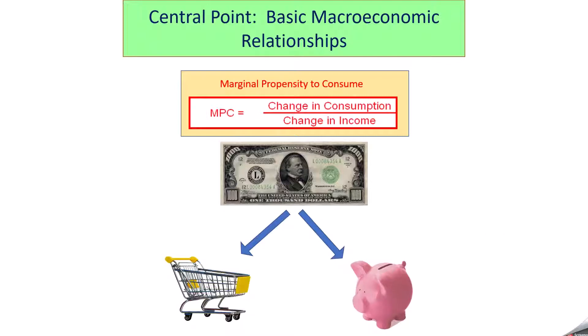So imagine a scenario where you decide to spend $600 of it and save the other $400. In that case, your income has gone up by $1,000, that's the denominator here, and your consumption has gone up by $600. So your MPC would be 60% or a .6. And to give you one other scenario, if you decided to spend $900 of it and save only $100, like a lot of college kids that I know, then your MPC would be a 90%, $900 over $1,000.